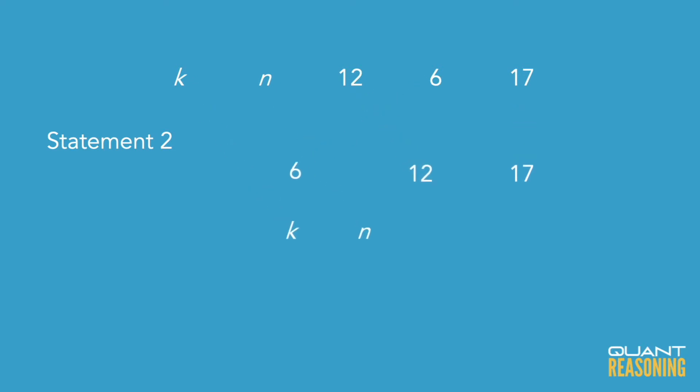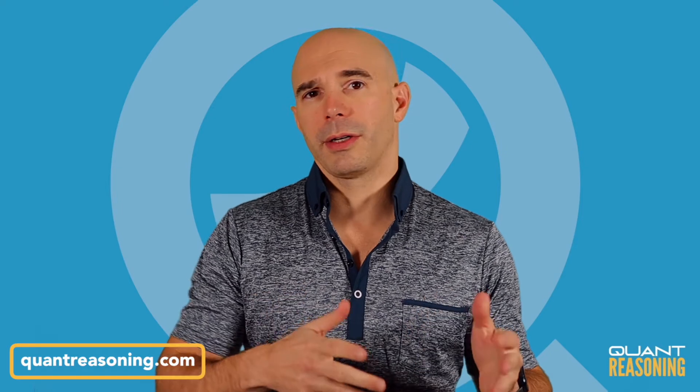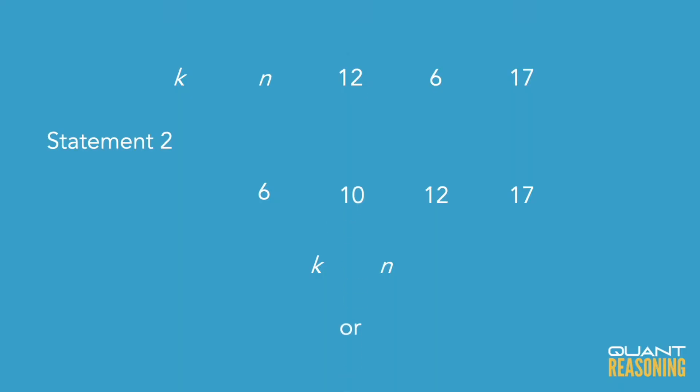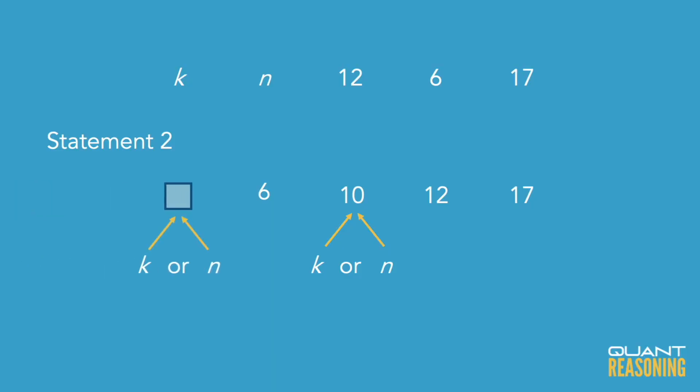Statement two tells us that the median of the list is 10. So it's probably a good idea to arrange the list in ascending order, at least for the numbers that we do know. So we'd have 6, 12, 17, and then there's also n and k somewhere in there. If 10 is the median, that means either n or k would have to be 10, because the median of a list of five numbers would be the middle number. We don't know about a 10 in the list, so either k or n or both would have to be 10. The other one would have to be less than or equal to 10 in order for 10 to be the middle number in this list.